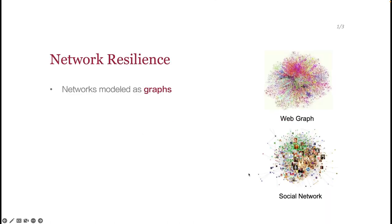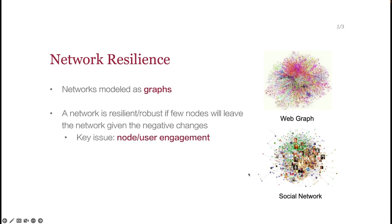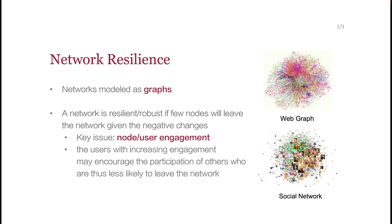Real-world networks are usually modeled as graphs, as shown in these figures. Network resilience refers to a network's ability to adapt and endure changes, where node engagement is a key issue. A network is resilient if few nodes will leave the network given negative changes, for example, natural or artificial attacks. The departure of users may contiguously affect the engagement of other users, which may even lead to the collapse of a network like Friendster.